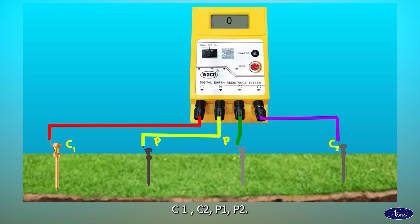Connect C1, C2, P1, P2 in the tester and the four Earth rods in the sequence: C1, P1, P2, C2.